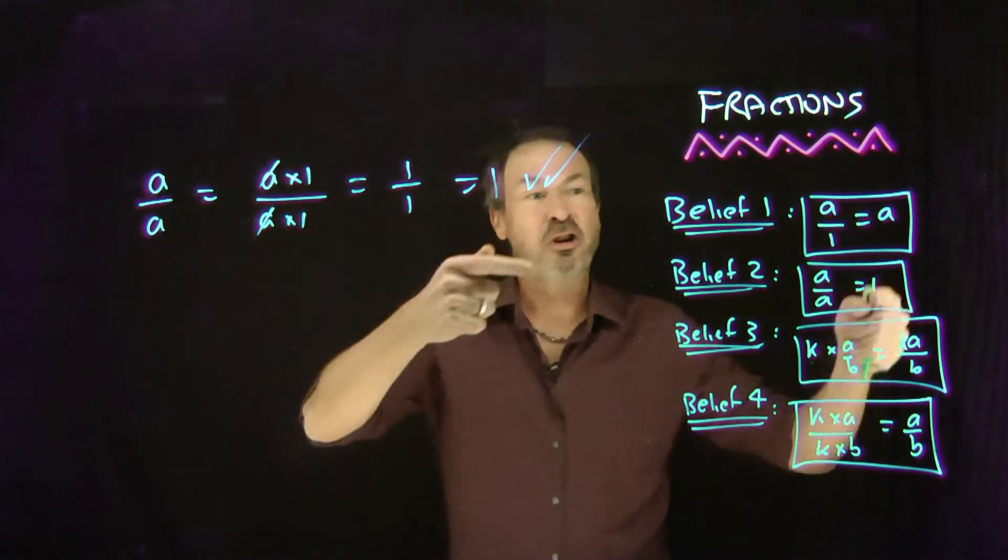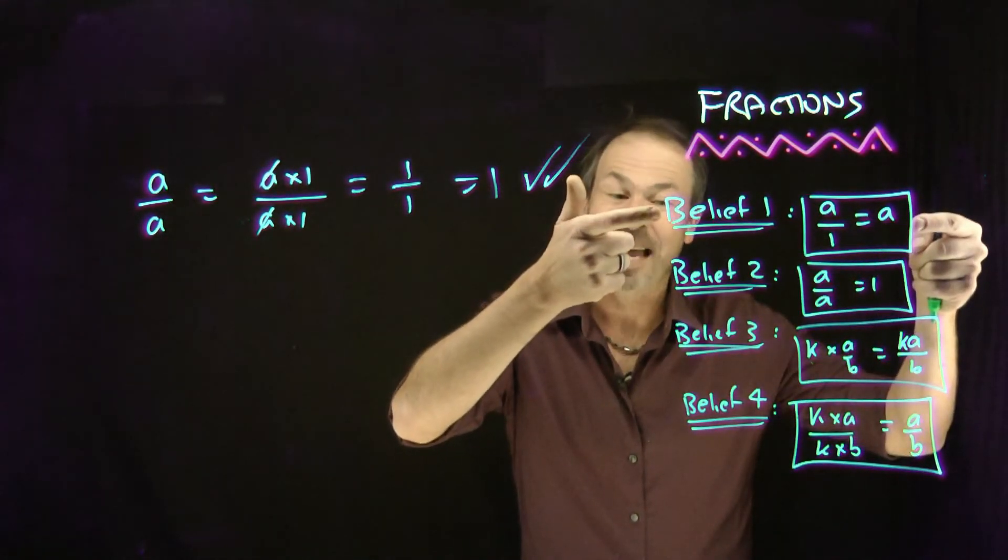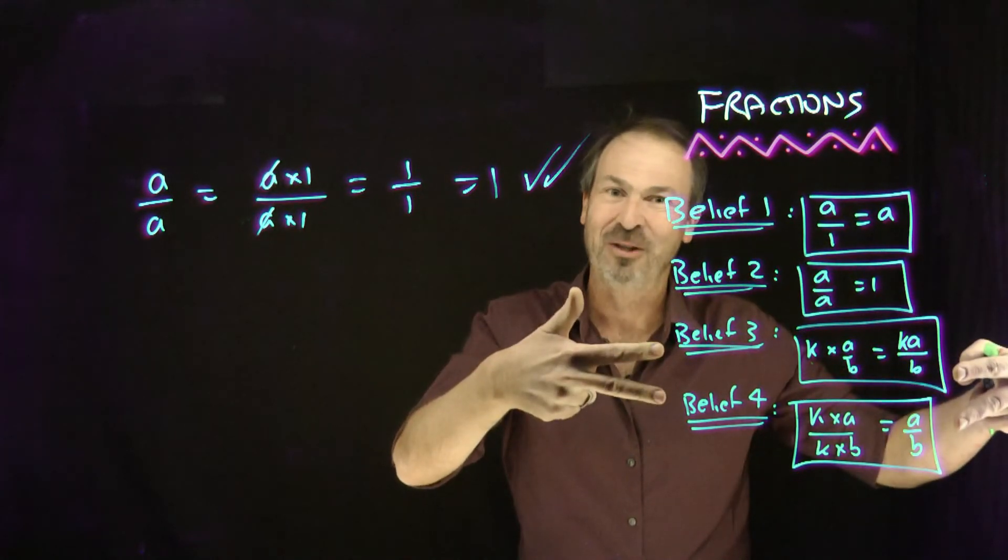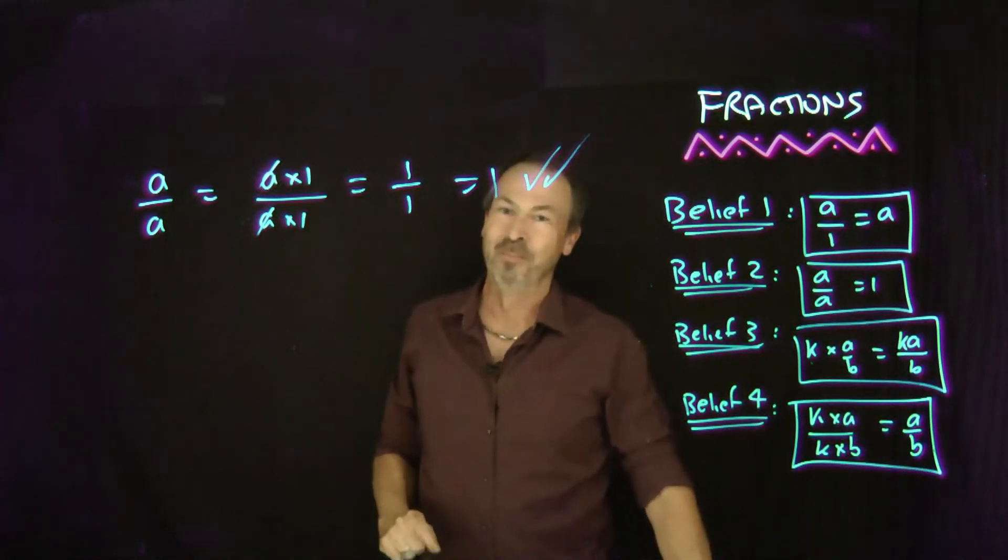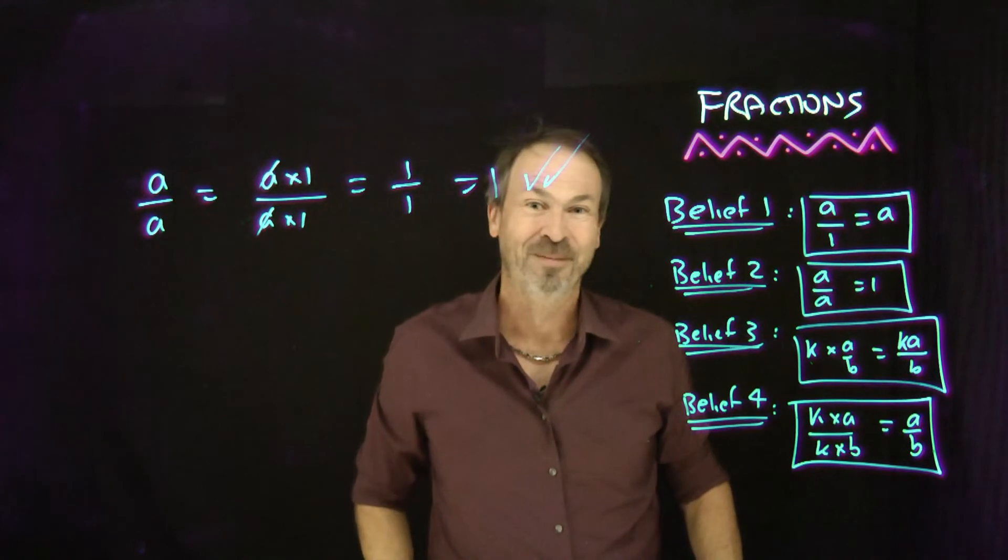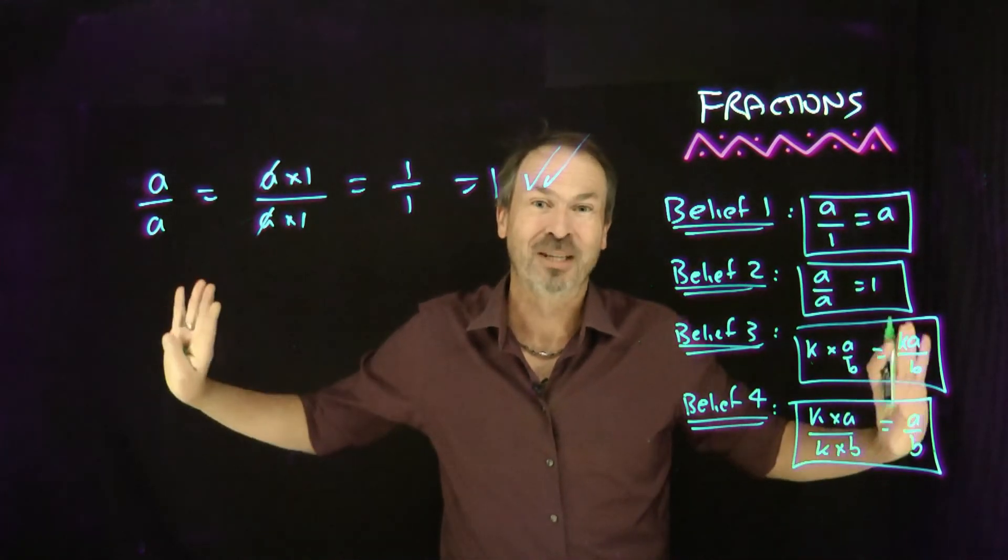But if theory is your thing, then I have a challenge for you. Can you show that belief number one is actually a logical consequence of those two and technically does not need to be listed on the board if you believe that one over one is one? Give it a try if you'd like, or just move on to the next video.